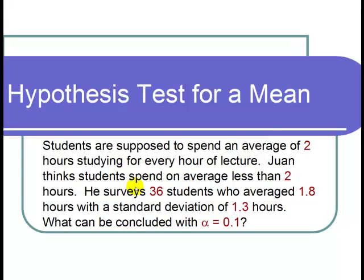Juan thinks students spend on average less than 2 hours. He surveys 36 students who averaged 1.8 hours with a standard deviation of 1.3 hours. What can be concluded with alpha equals 0.1?